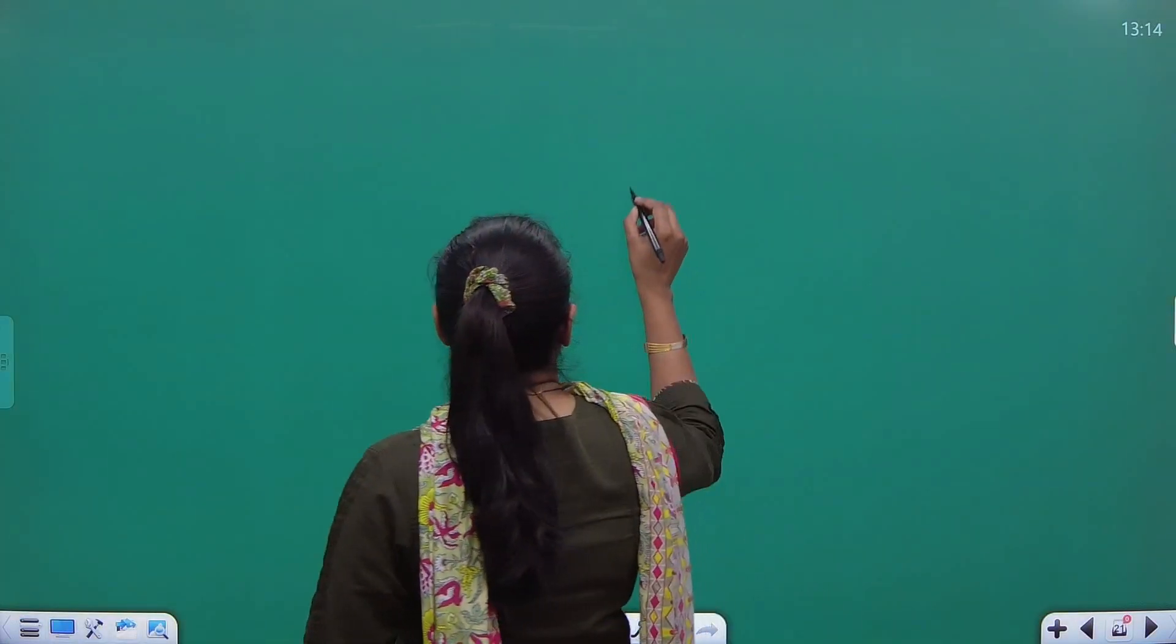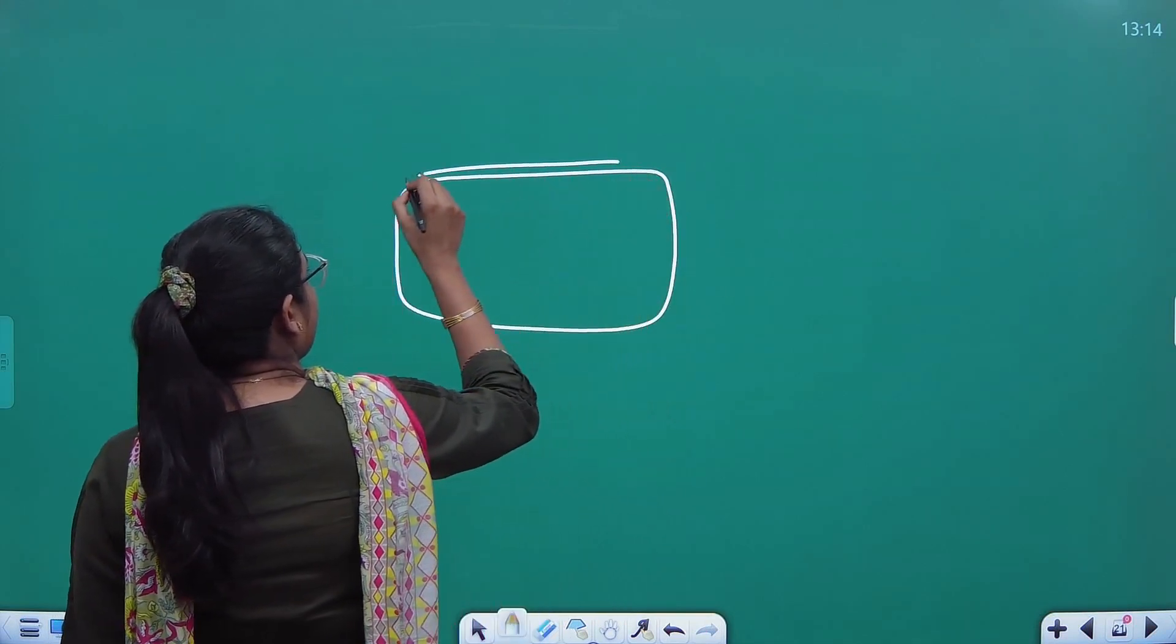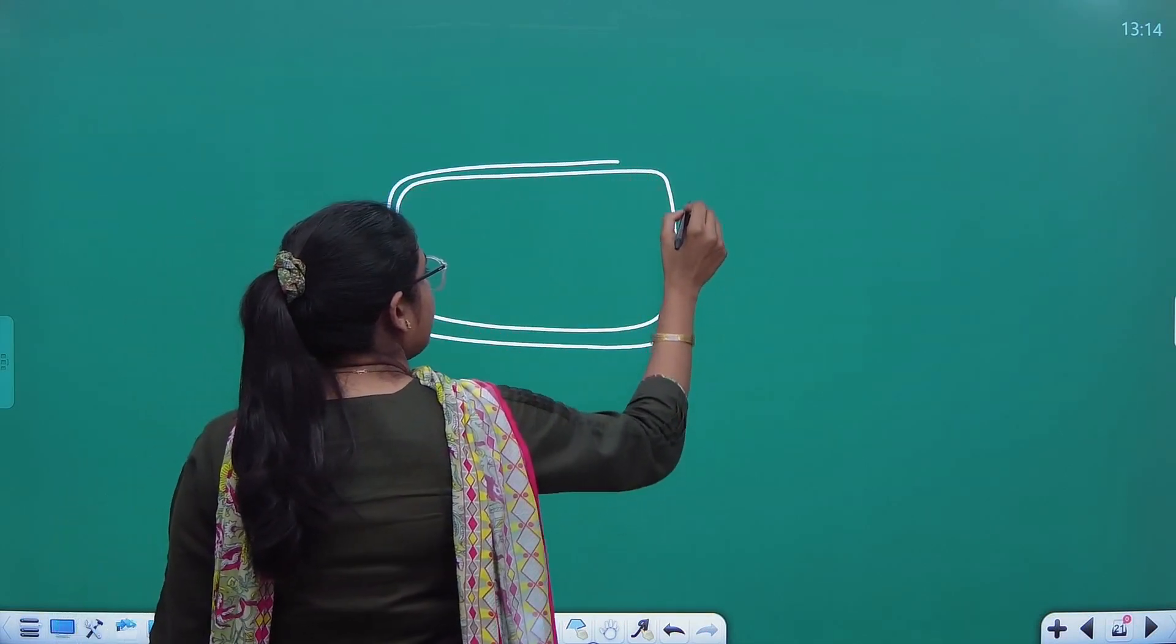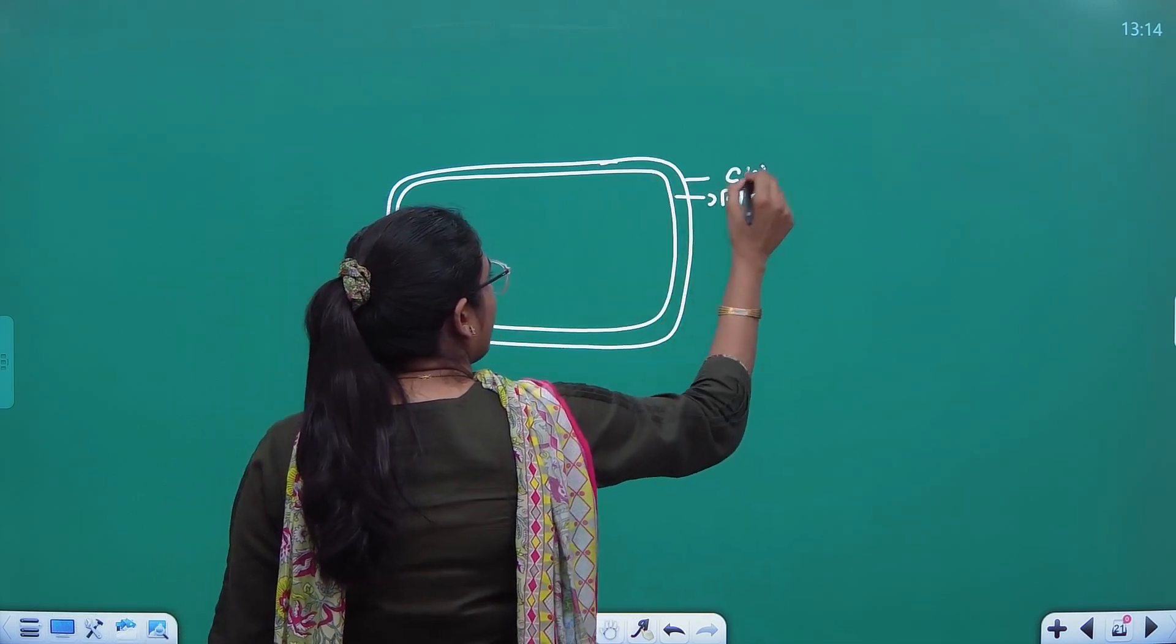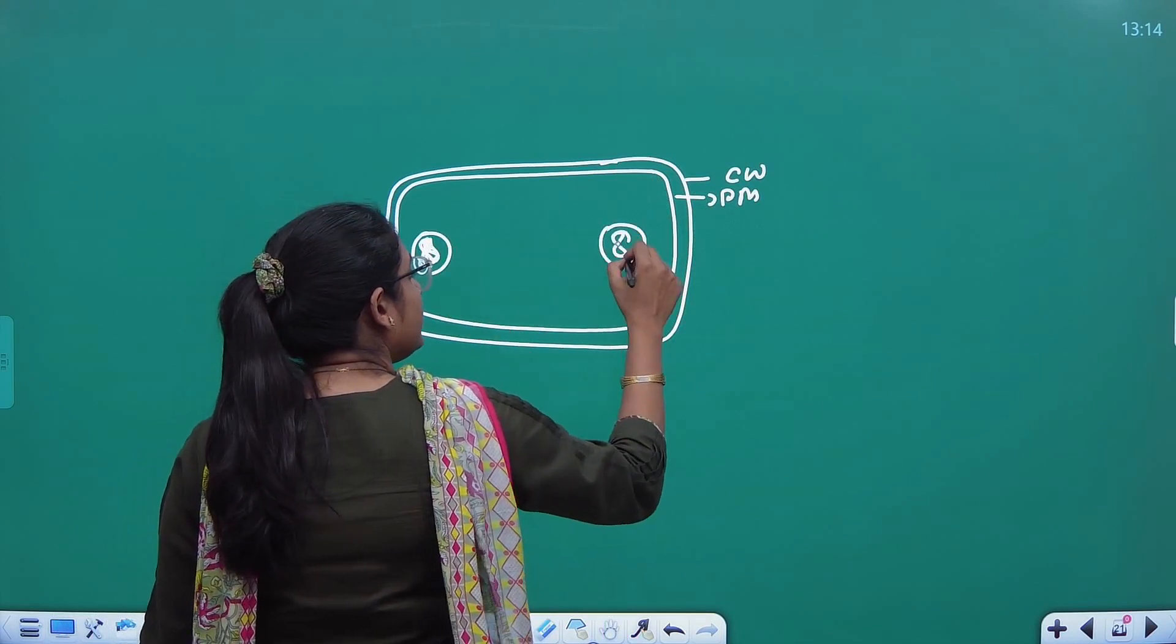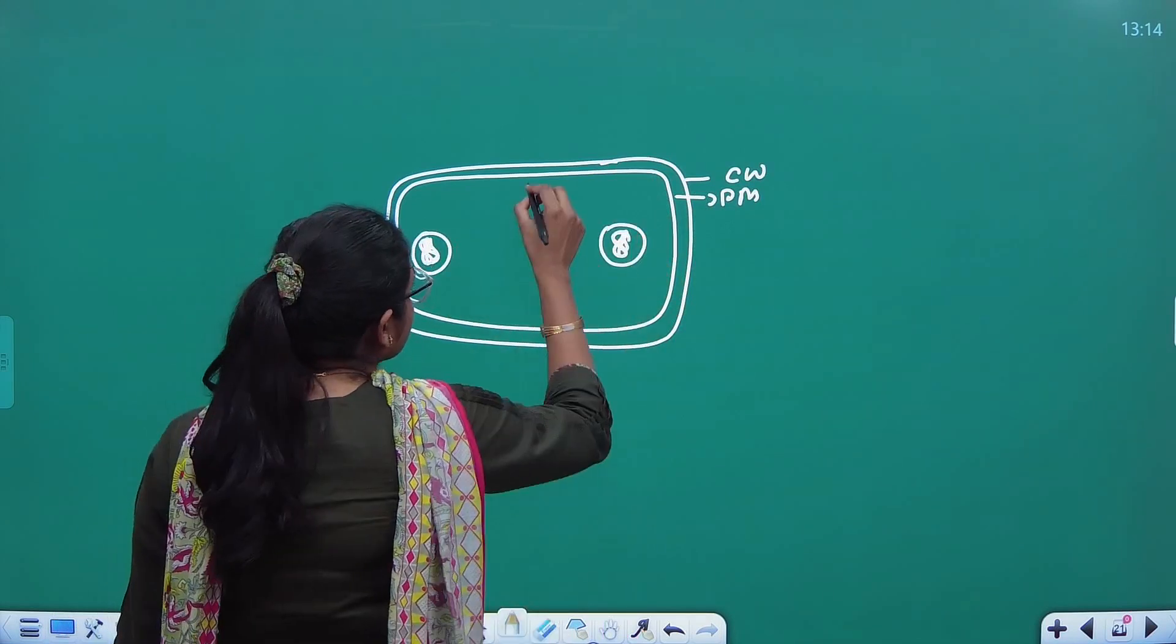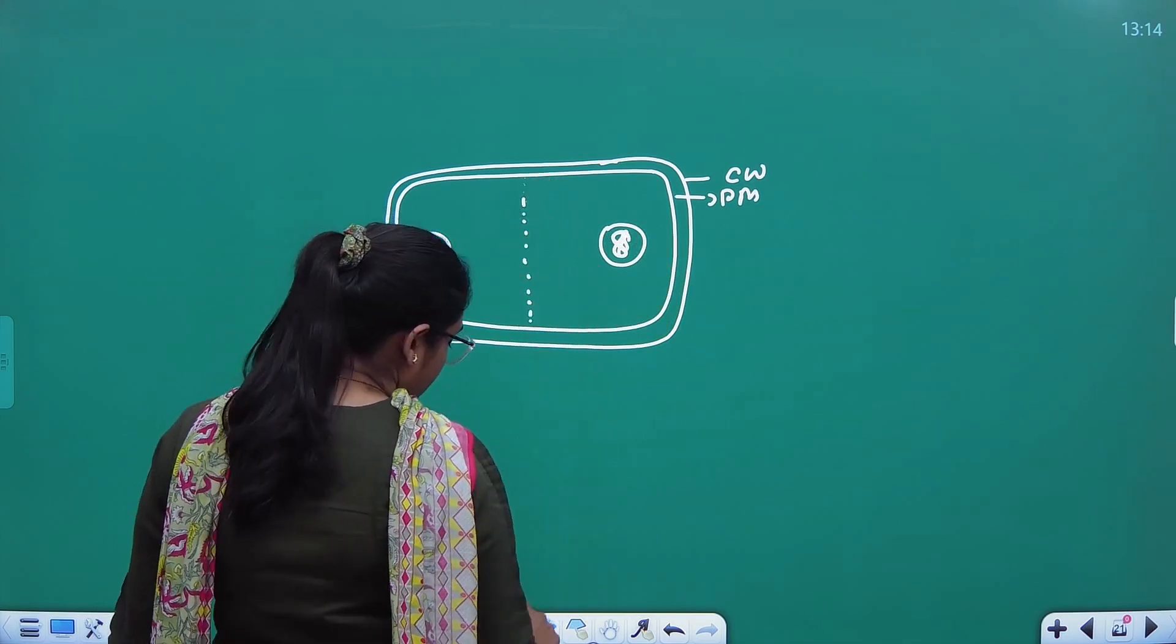Let's talk about cell division here. For example, this is one cell. This is plasma membrane. This is the cell wall. This is the plasma membrane. This is the cell wall. Now, the nucleus is divided into two. This is the nucleus. And now, the cell wall formation has started.